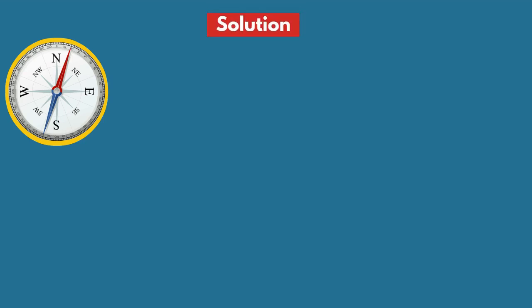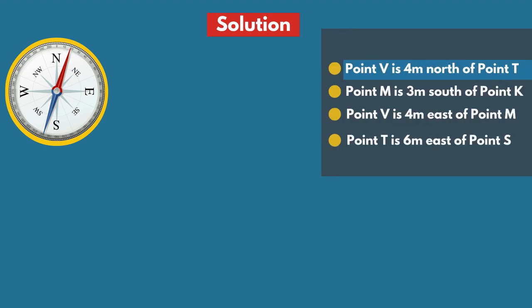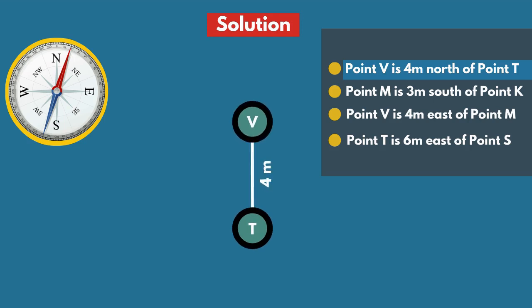Let's see the solution. They given that Point V is 4 meters north of point T. Here, this is point T, and point V is 4 meters north of point T.